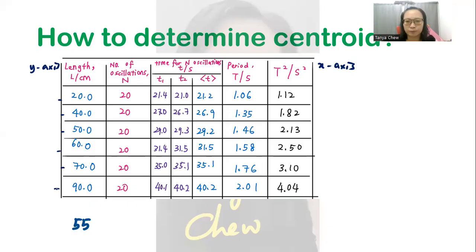What about the x-axis? You just take 1.12 plus 1.82 plus 2.13, 2.5, 3.1, 4.04 and divide it by 6 and you will get 2.45. Round it off to three significant figures just like your x-axis. So I got a point here. My centroid is 2.45 and 55.